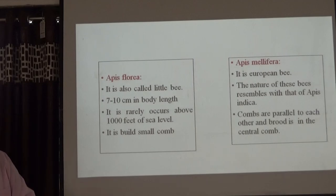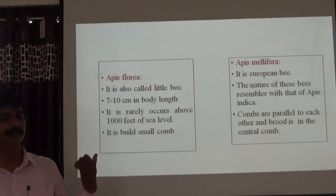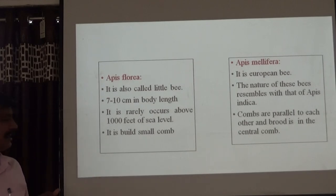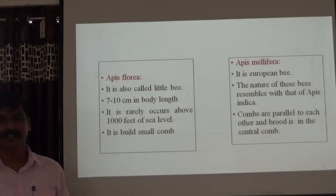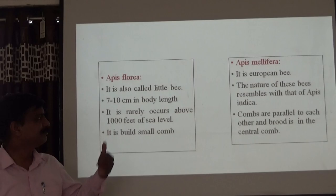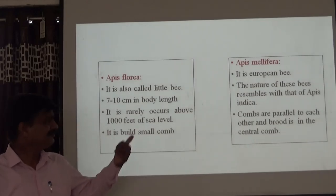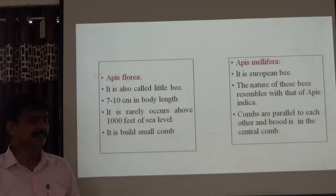Next, Apis florea — it is also called the Indian dwarf bee. The size of the body is 1 to 10 mm. It occurs above 1000 feet of sea level and builds a small comb. It is not generally useful for the production of honey.